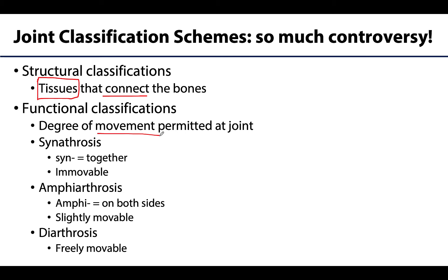Of the functional classifications, there are three types. The joints that are immovable — so no movement whatsoever — these are synarthroses. An amphiarthrosis is a slightly movable joint, and when I say slightly movable, I definitely mean that; sometimes the movement is so slight that it's not even perceivable. And lastly, typically when we think of a joint, we are thinking of diarthrotic joints, which are freely movable. All synovial joints, which is a structural classification, are diarthrotic. Diarthroses come in a variety of shapes and permit many different types of movement and to varying degrees.